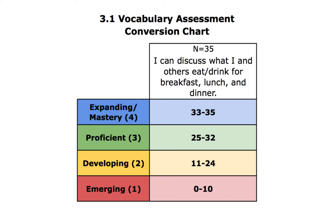After you have developed your grading categories along the left-hand side, you must determine the number of questions correct that would denote either mastery, proficiency, and so forth down your categories. This is a great discussion to have with your colleagues, departments, and administrators. What number or range would really denote mastery out of 35 total questions? Same thing with proficiency — where do we draw the line between proficiency and mastery, or proficiency and developing? Ultimately, this is for you to decide in your classroom, but you can see where I drew my boundaries for this assessment.